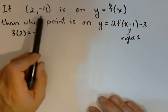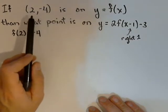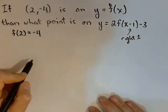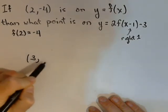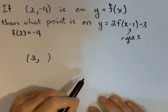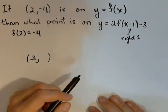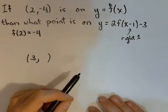So I know that what's going to happen to this point is it's going to get moved right one, which is going to affect the x-coordinate. That's the only thing that's going to affect the x-coordinate. So my new point is going to have an x-coordinate of 3, and then we need to find the y-coordinate. So now we're going to go see what kind of vertical transformations we have.